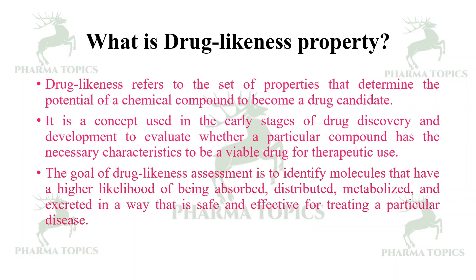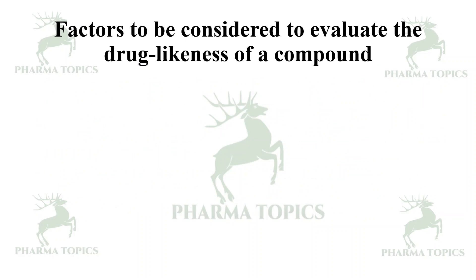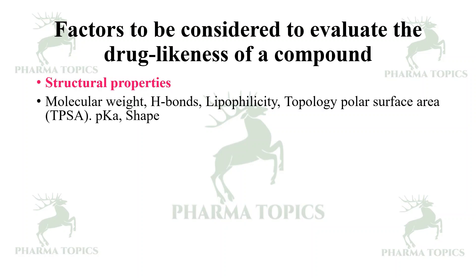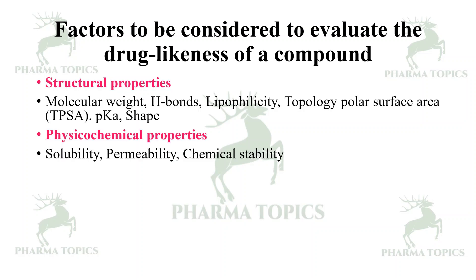Factors to be considered to evaluate drug likeness include structural properties such as molecular weight, hydrogen bonds, lipophilicity, topology, polar surface area (TPSA), ionization constant, and shape. Physicochemical properties such as solubility, permeability, and chemical stability are also considered.